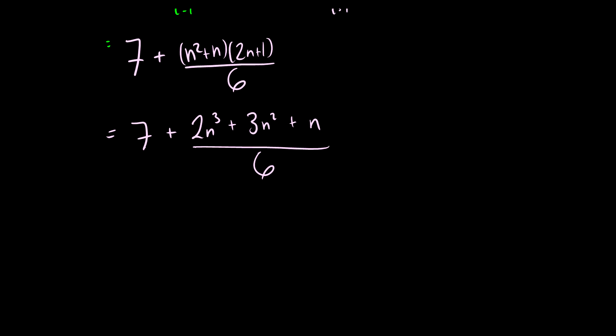So our final solution here is going to be n cubed over 3 plus n squared over 2 plus n over 6 plus 7.